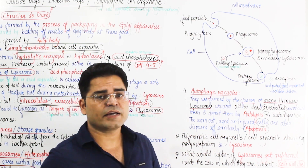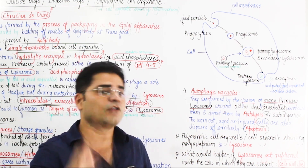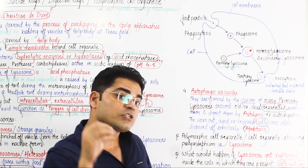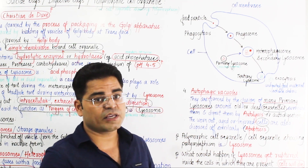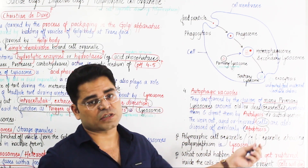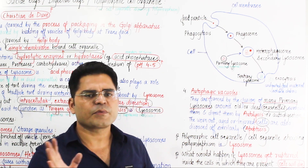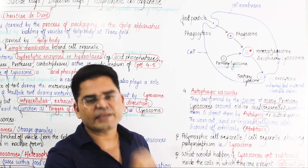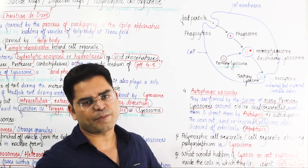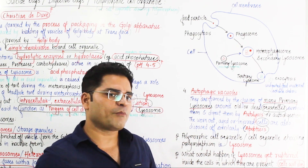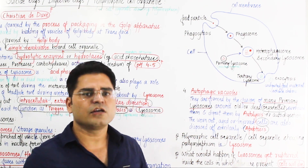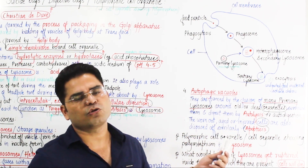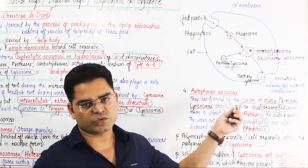The autophagic vacuole can destroy cellular components through a process called autolysis. Sometimes, autolysis can involve the destruction of an entire cell. When an entire cell is programmed to be destroyed, this is called apoptosis — programmed cell death.